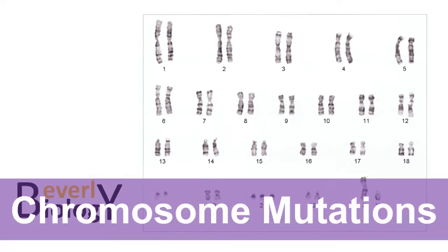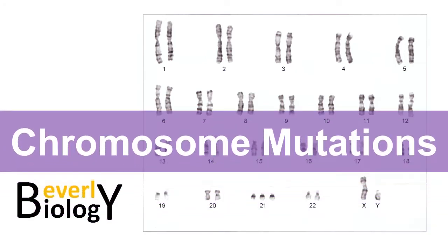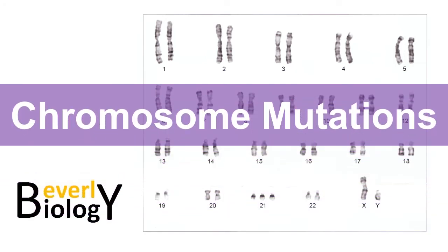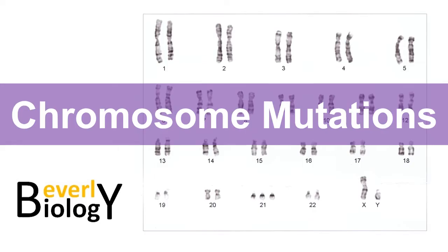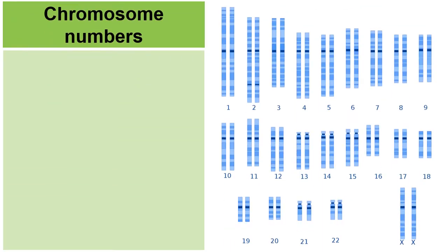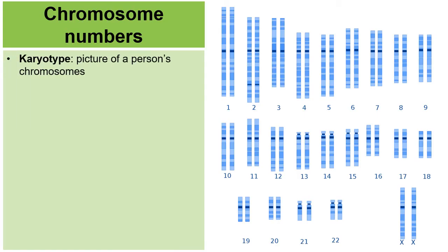The topic of this video will be chromosomes and their mutations. When we look at a picture like this, it is called a karyotype — a picture of a person's chromosomes.